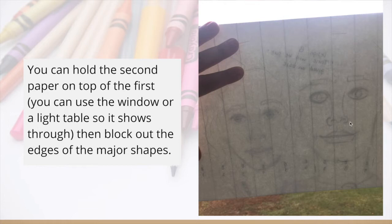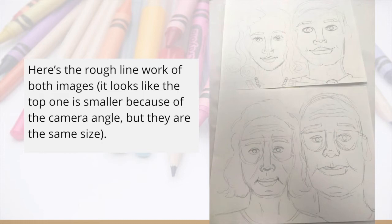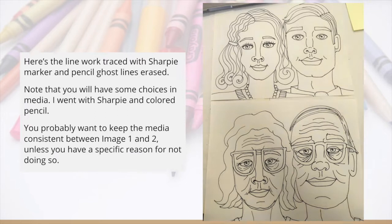Here's a rough line work of both images. It looks like the top one is smaller only because of the camera angle, but in actuality they're both the same size. She chose to trace with Sharpie and then erase all the extra pencil lines. Note that you will have some choices on media — she chose Sharpie and colored pencil. You can also choose paint or other materials, but I would stick with Sharpie, colored pencils, or dry media, because you want to make sure the paper stays as flat as possible. When you add paint to paper, it can buckle and then it's more difficult to adhere to paper later on.